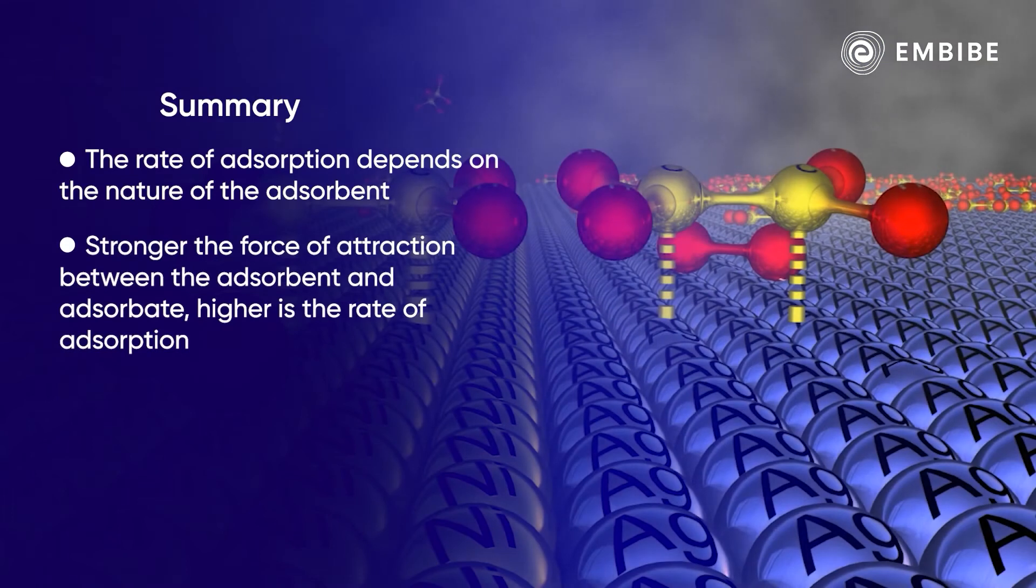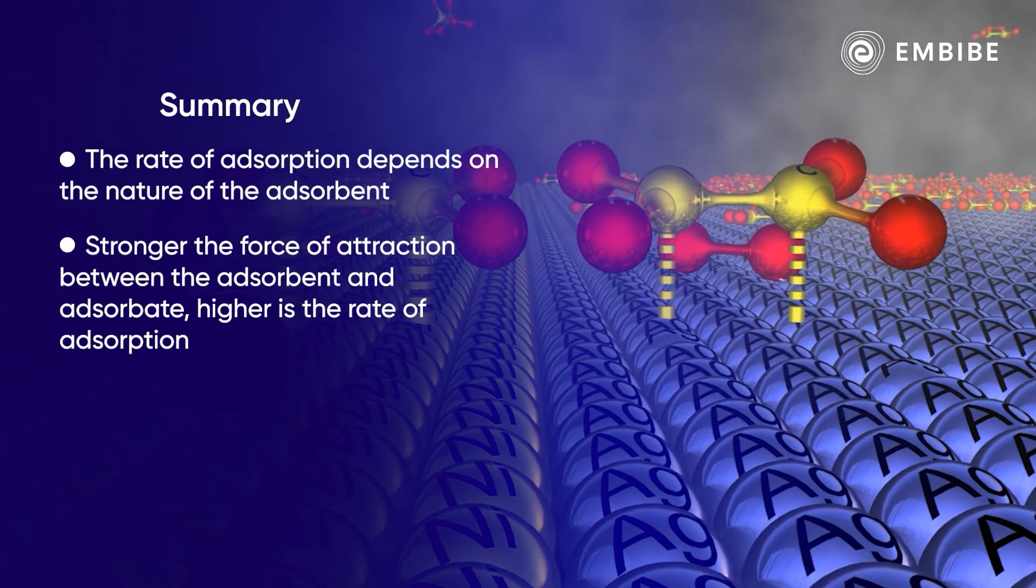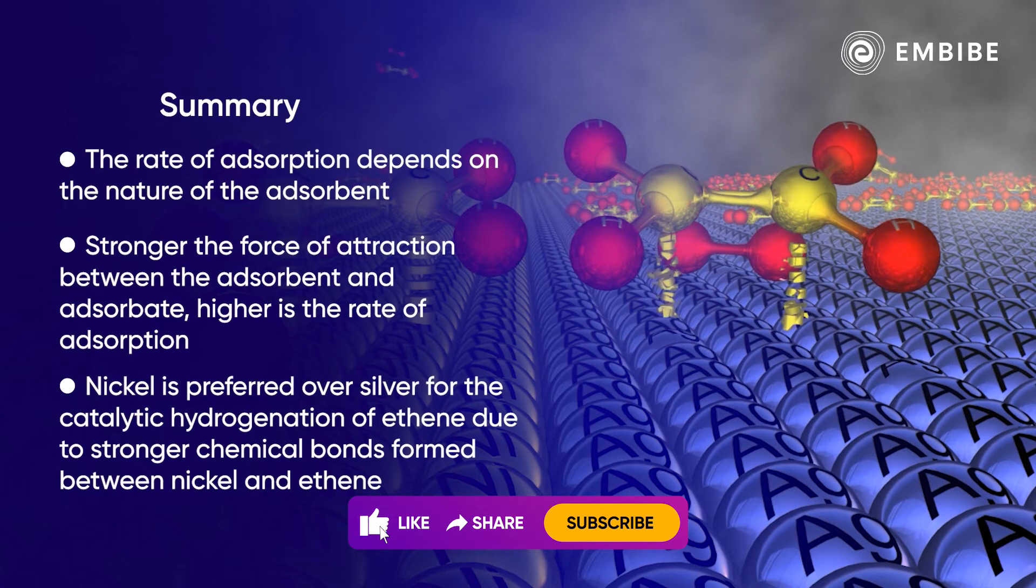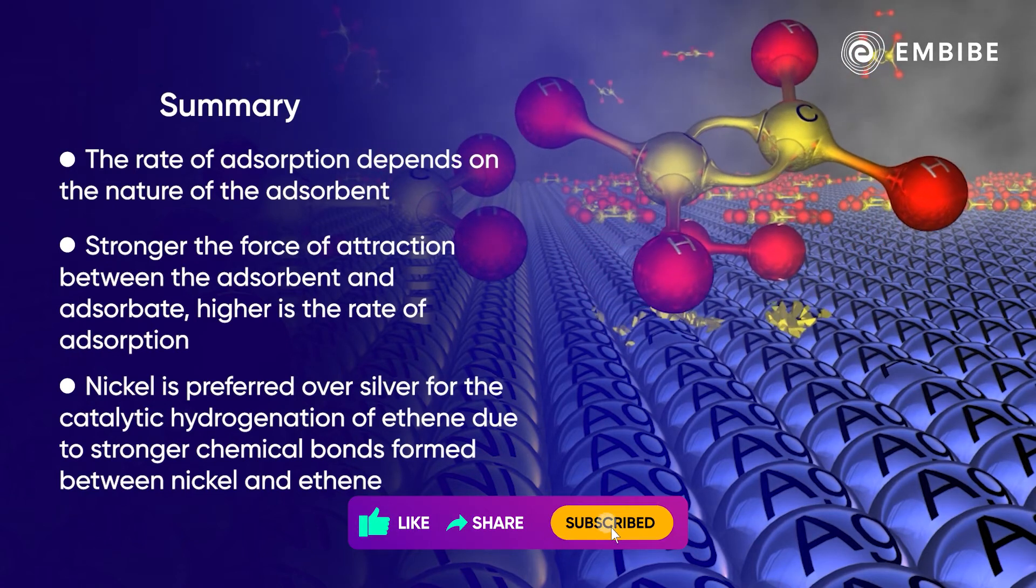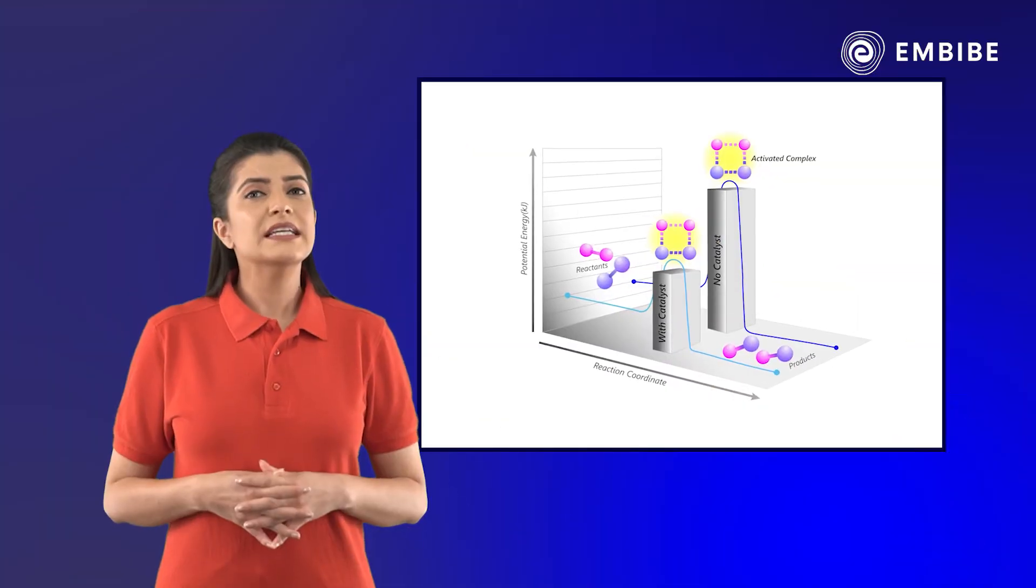Stronger the force of attraction between the adsorbent and adsorbate, higher is the rate of adsorption. Nickel is preferred over silver for the catalytic hydrogenation of ethene due to stronger chemical bonds formed between nickel and ethene.